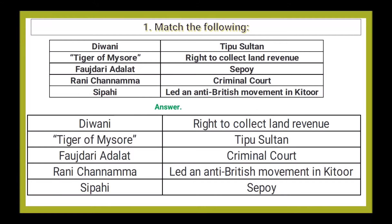Let's solve the textbook exercises. The first question is Match the Following. Diwani: right to collect land revenue. Tiger of Mysore: Tipu Sultan. Faujdari Adalat: criminal court. Rani Channamma: led an anti-British movement in Kitoor.